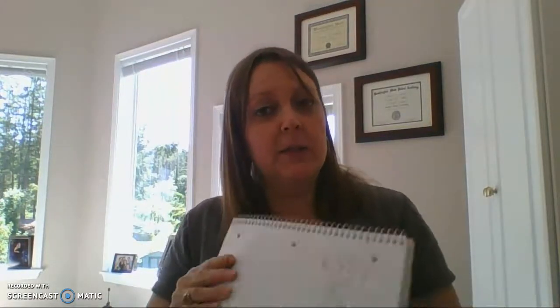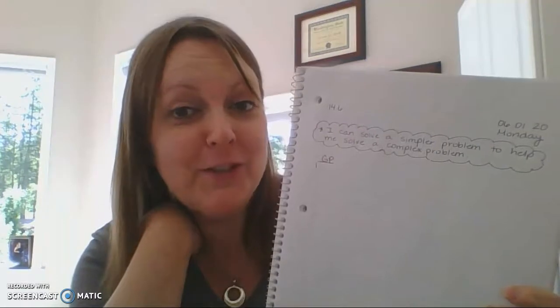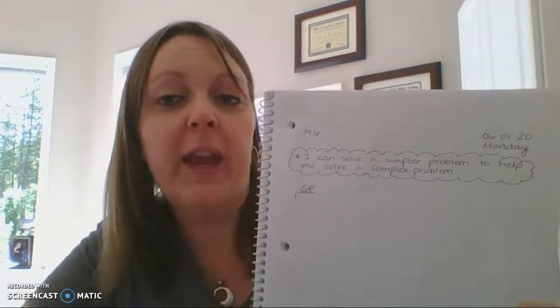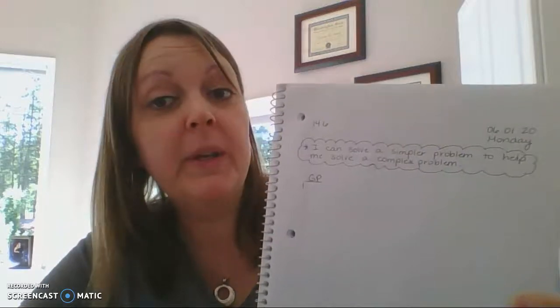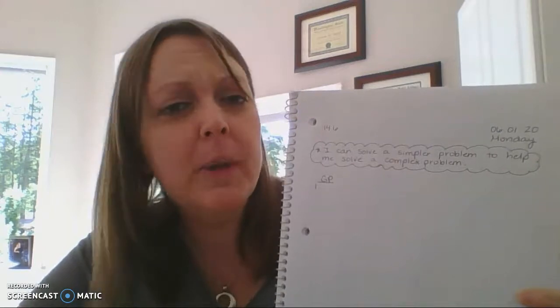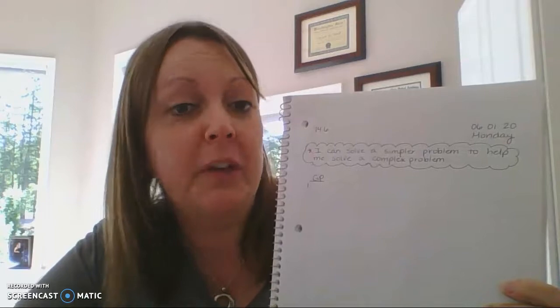So today we are on page 340 of our textbook. You're going to need a piece of paper and a pencil. And our learning target today is, oh and guess what? It's the first day of June. Happy June! So our learning target today is I can solve a simpler problem to help me solve a complex problem. Complex just means one that is a little bit more challenging or harder. So we're going to solve something easier to figure out a harder one.